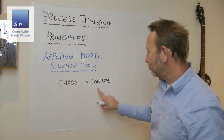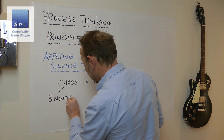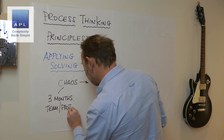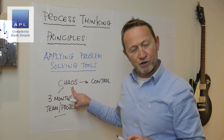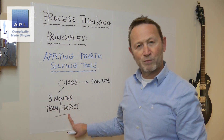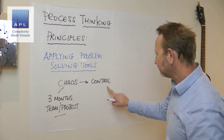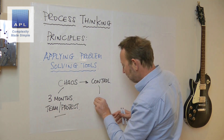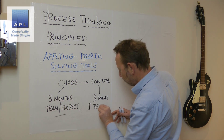Has my problem appeared from a chaotic situation or has it appeared from a controlled situation? If it's appeared from a chaotic situation, it's probably going to take three months with a cross-functional team and a project to fix it. By the way, if your new product introduction process is a disaster, all of your problems are going to look like this because you haven't got a clue how to implement control. If you're not using FMEA properly, however, if you are using FMEA properly and the process is in control, this problem is going to take three minutes to fix and can typically be fixed with one person.